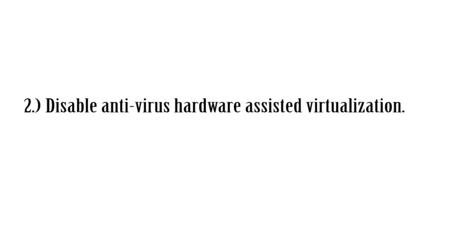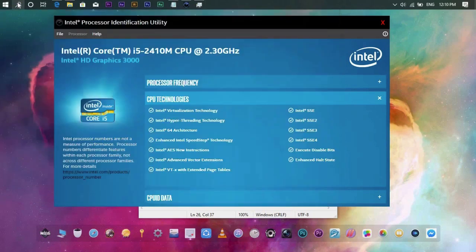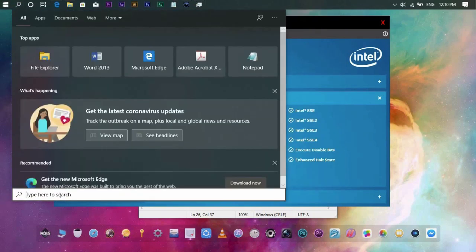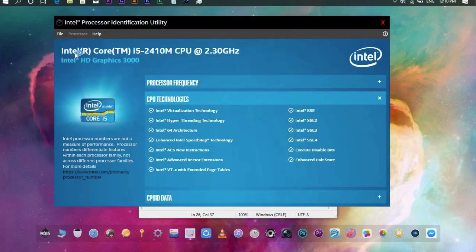Number 2: If you are using a third-party antivirus software, check if its Assisted Virtualization is enabled, then disable it. Or, you can simply disable your third-party antivirus software and enable your Windows Defender or Windows Security application.